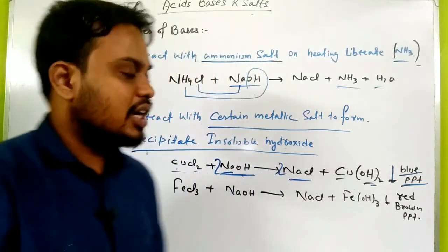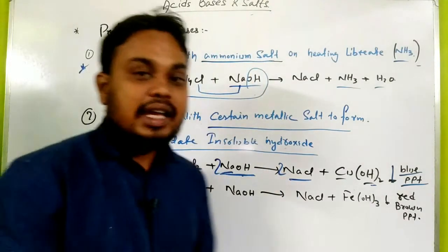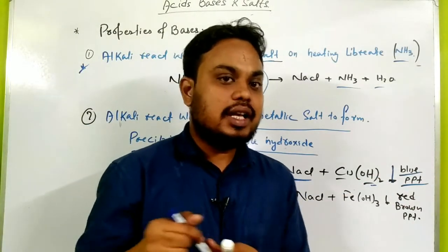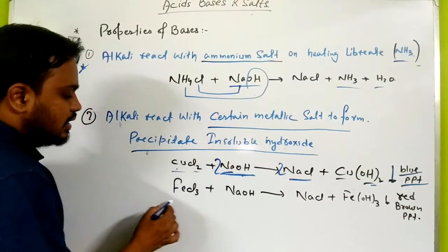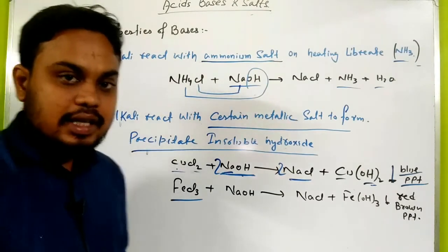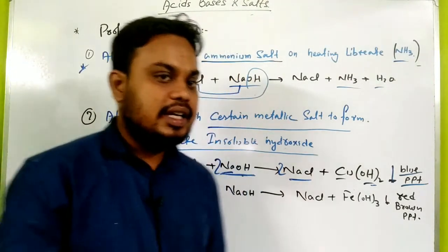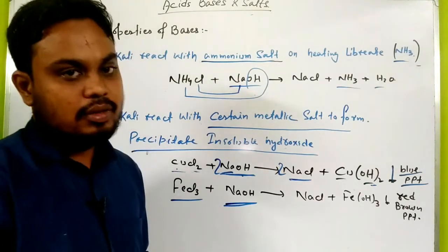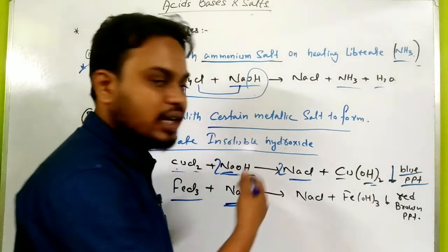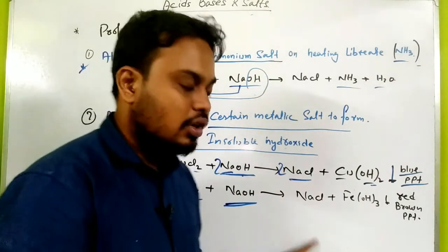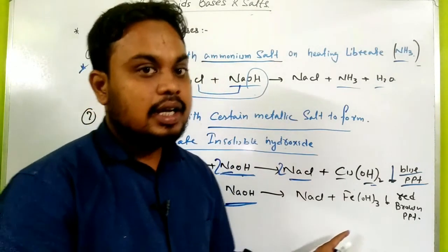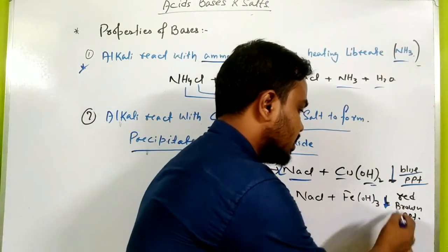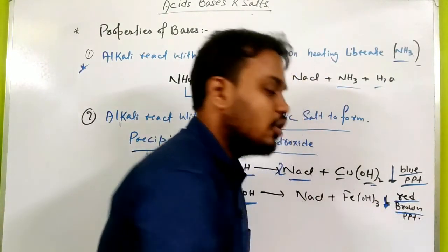So certain metallic salts react with base to form insoluble precipitates. Another example: FeCl3 (ferric chloride) — note that FeCl2 is ferrous chloride. FeCl3 reacts with NaOH to form NaCl and ferric hydroxide Fe(OH)3 as a precipitate. The color of this precipitate is red-brown.